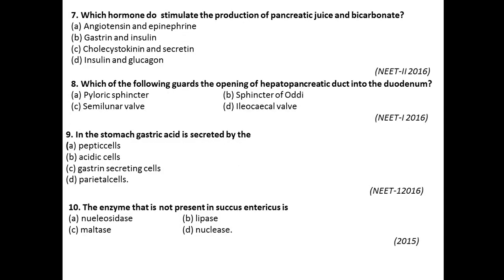Question number seven: Which hormones stimulate the production of pancreatic juice and bicarbonate? Cholecystokinin and secretin are the hormones which are essential for the production of pancreatic juices.